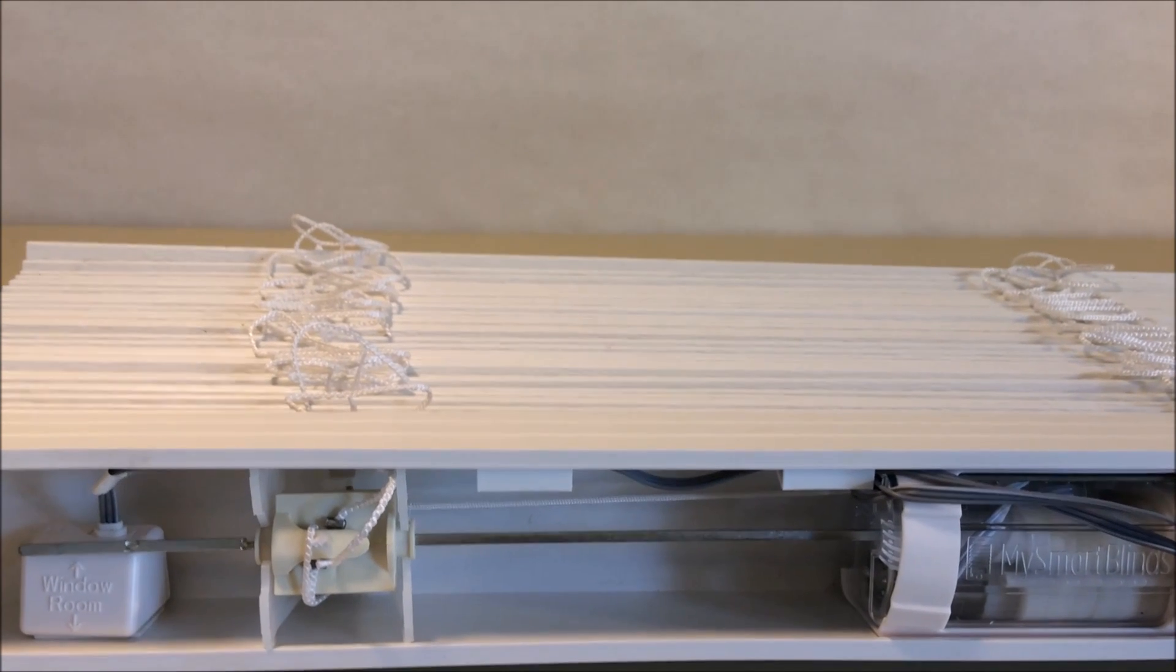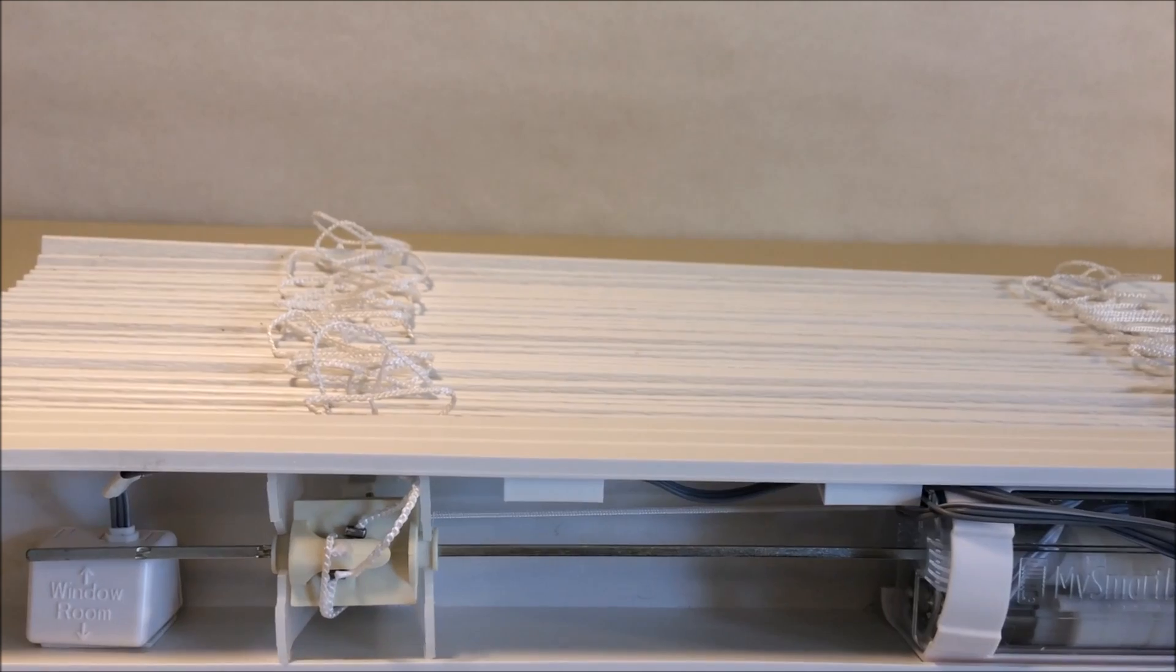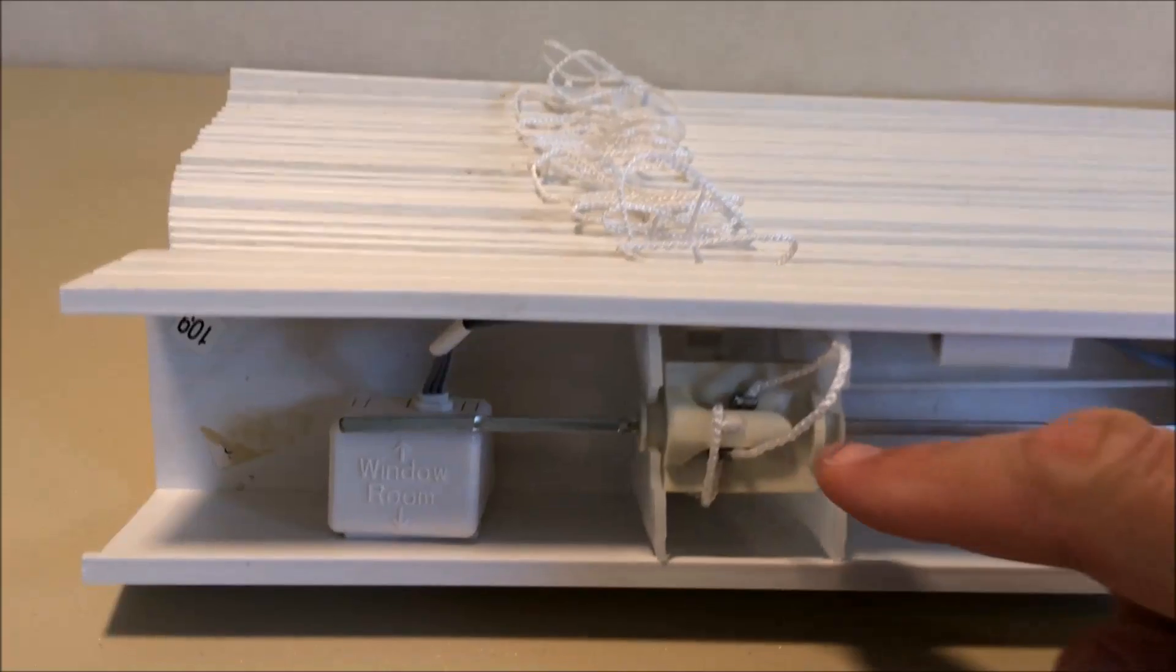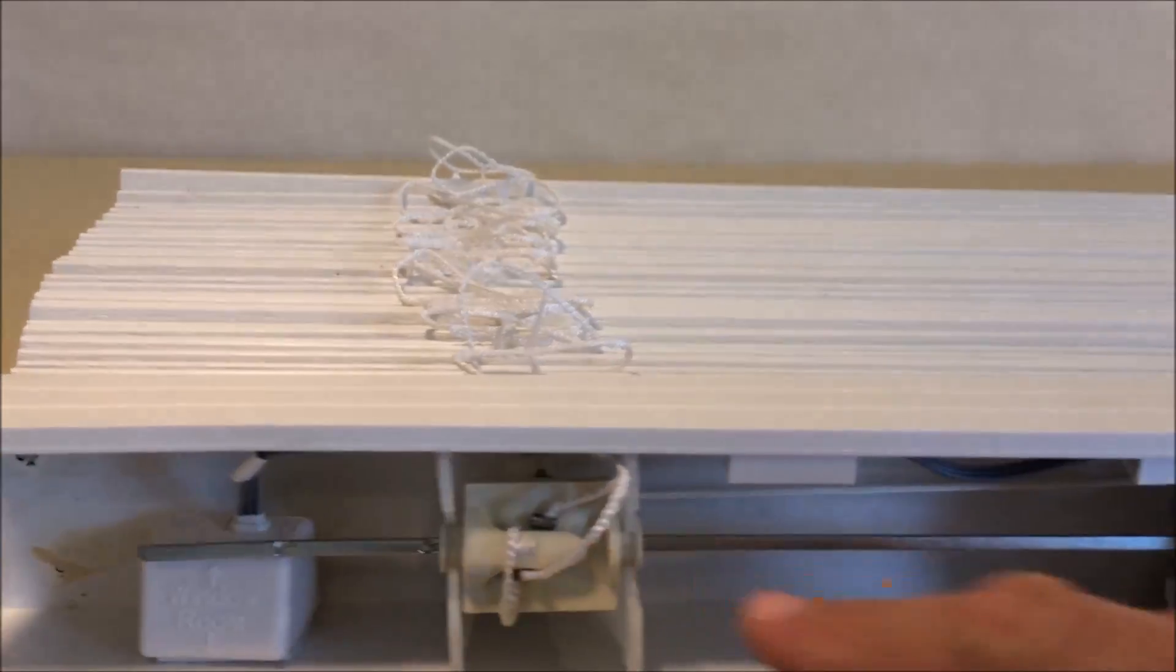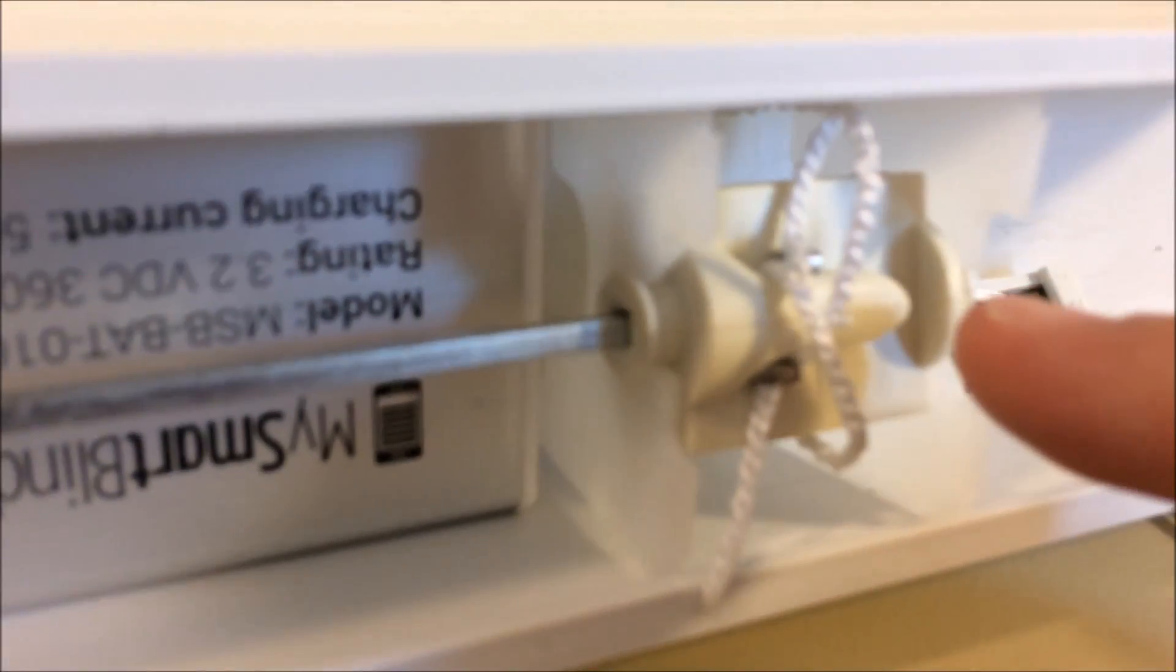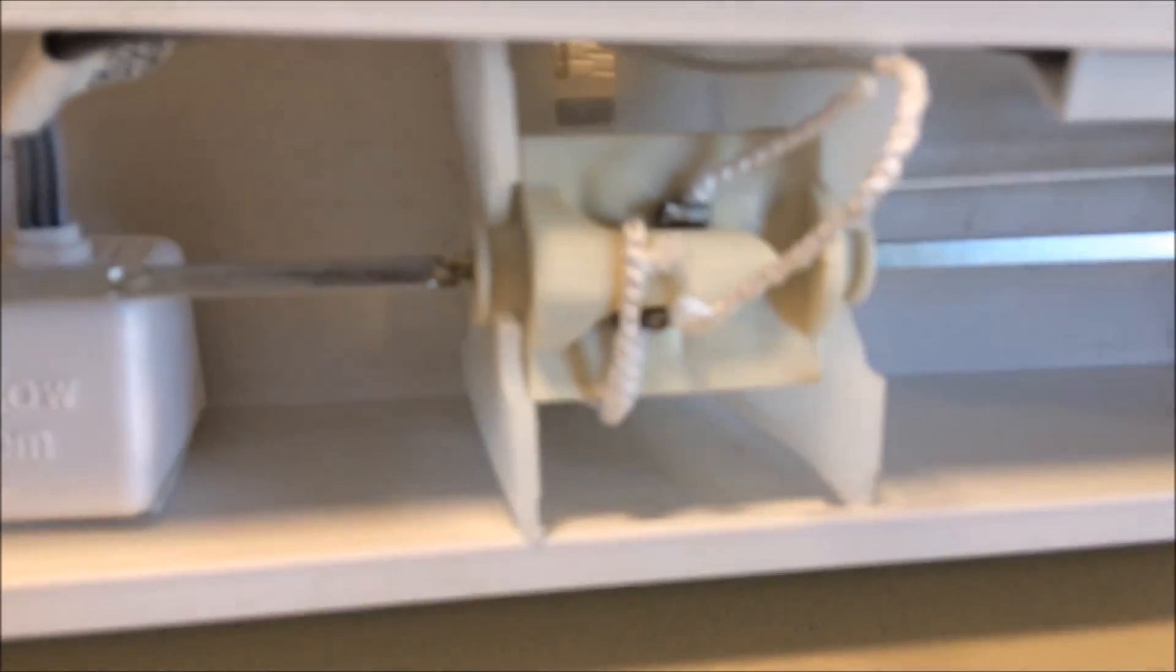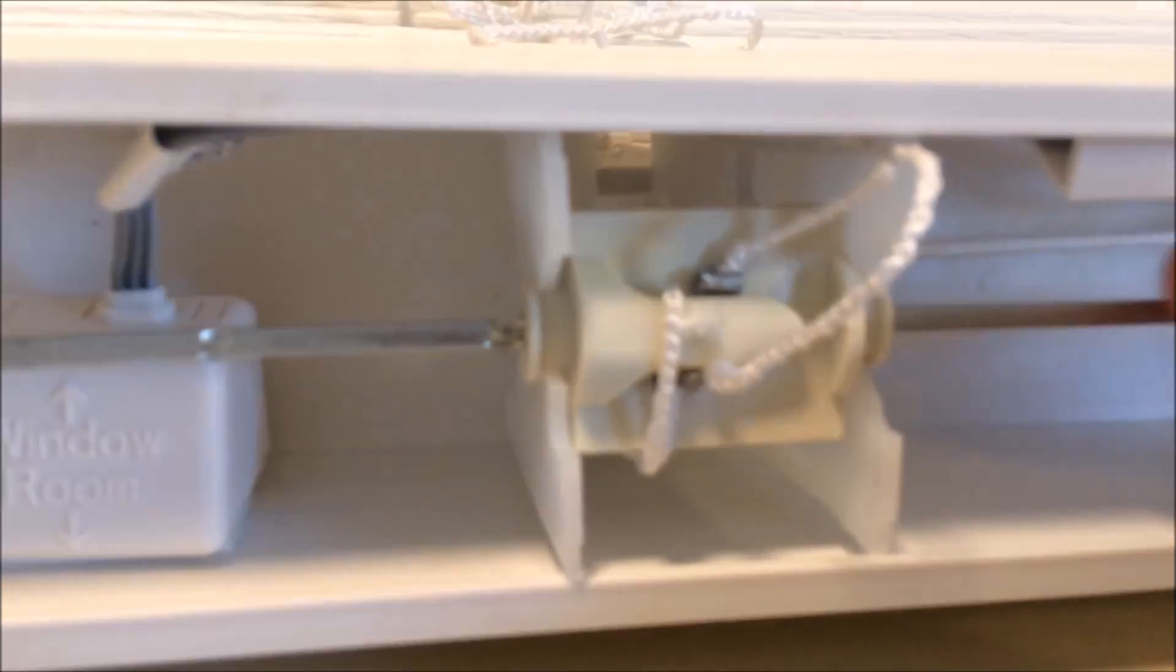Now that we've actually completed the installation of our My Smart Blinds unit, there are three or four tips we feel we need to pass along. First, I want to point out this is what we're going to call a barrel roller. It's part of your original Venetian blind. In this case, there are three of them. You are going to want to make sure that all three of them are lined up in the correct position. In other words, all three are rotated to the exact same position before you reinsert your rod.